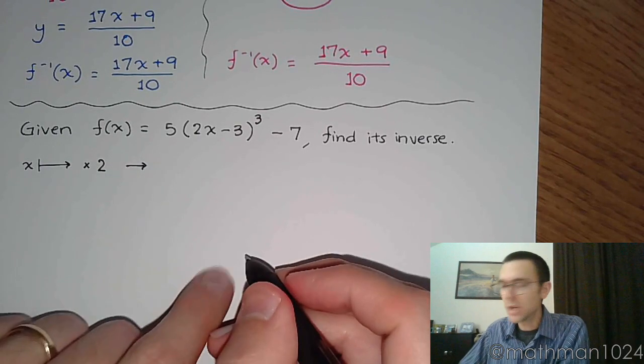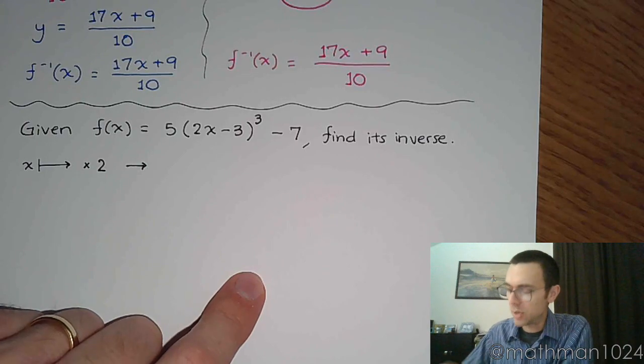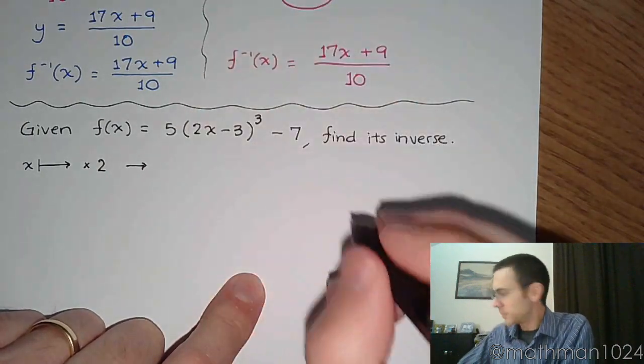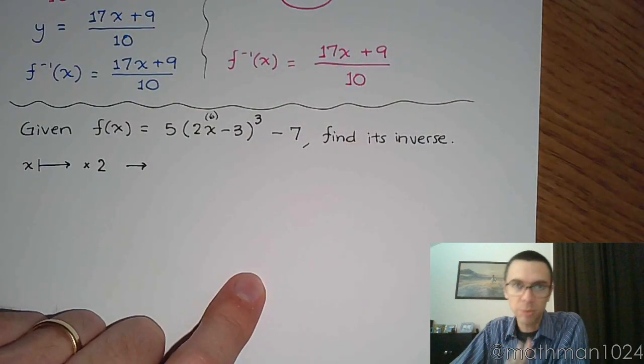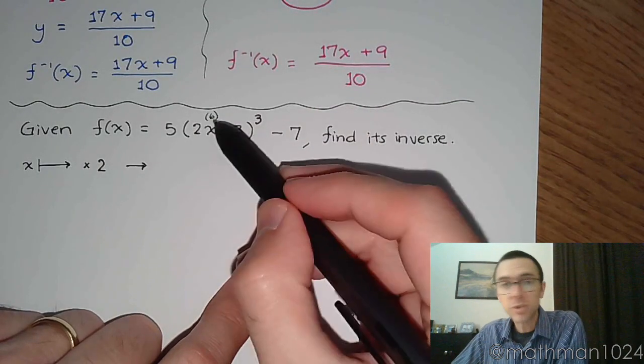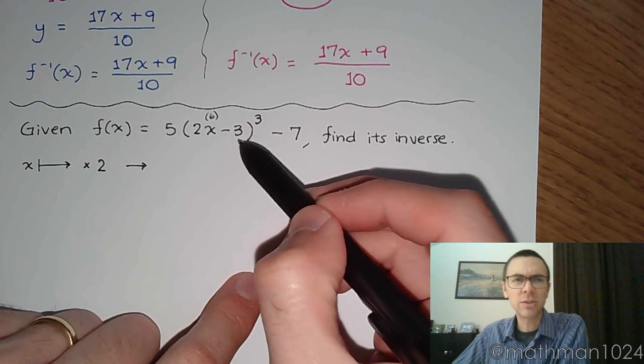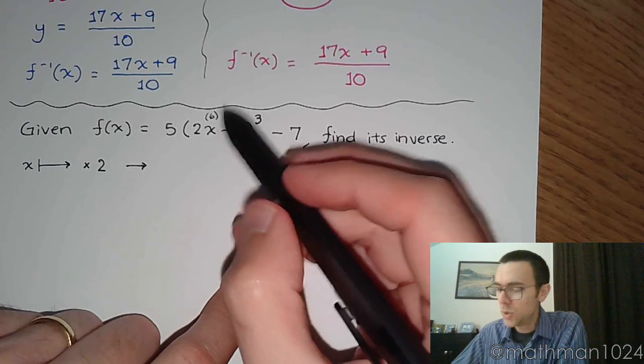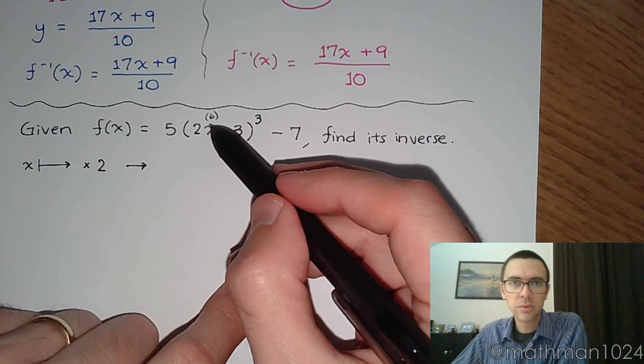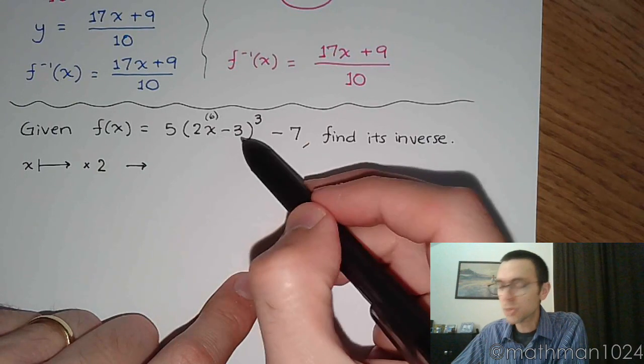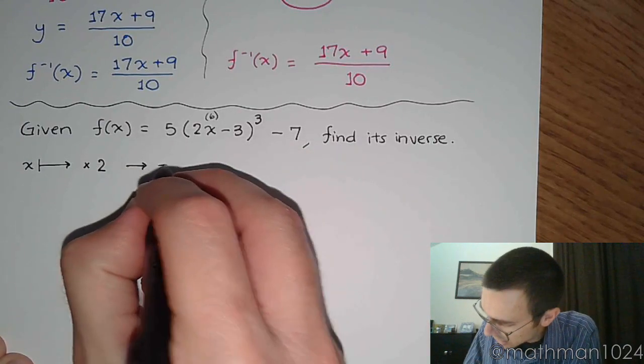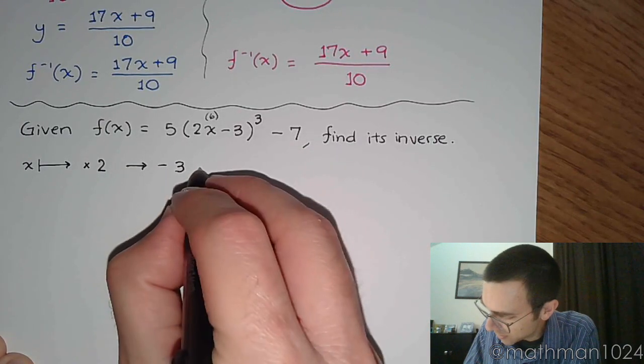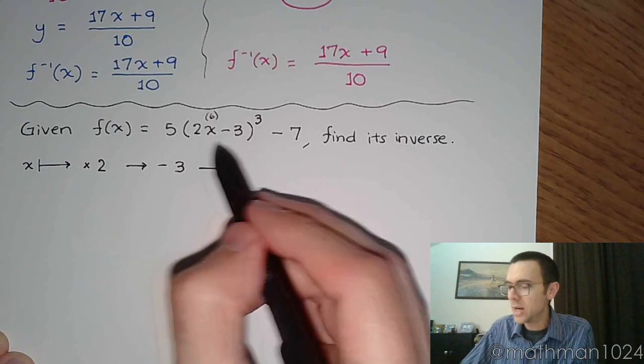After you multiply times 2, and again, imagine that you're just plugging a number in. If I were to plug in, say, 6. It doesn't really matter what number you plug in. If I plug in 6, you would do 2 times 6 first. You wouldn't subtract 3. You wouldn't cube things. You would do 2 times 6 to get 12. And then if you've got 12, you would subtract the 3. That's the very next thing that you would do. I would subtract 3. And once we have 12 minus 3, do you deal with the 5 or the cube next?